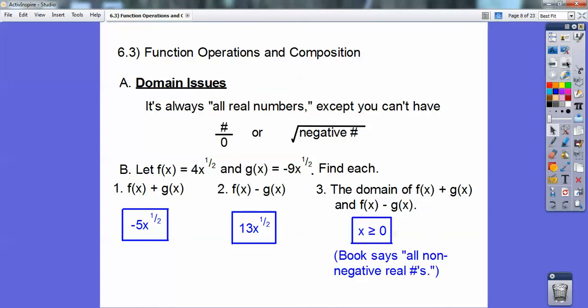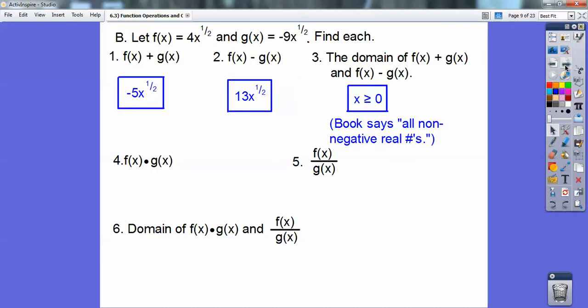Your books will probably say all non-negative real numbers, whatever. They're just trying to be fancy. That just means x greater than or equal to 0. They're all positive, including 0, whatever.